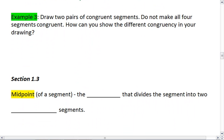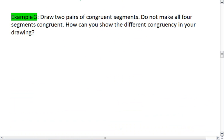This brings us to example three. I want you to draw two pairs of congruent segments. Do not make all four segments congruent. I want you to try to think about this for a moment, figure out how you can show that the different congruencies between the two different pairs. Pause the video and then resume when you're ready to see the solution.